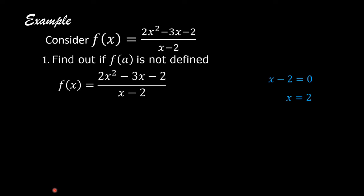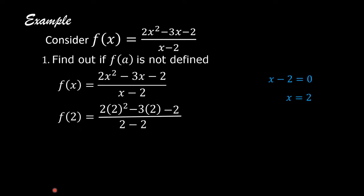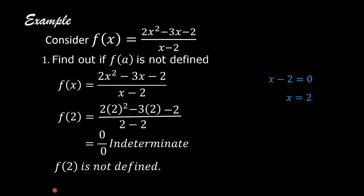By substitution, f of 2 equals 2 times 2 squared minus 3 times 2 minus 2, divided by 2 minus 2. This equals 0 over 0, and 0 over 0 is indeterminate. Therefore, f of 2 is not defined.